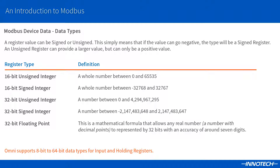Register values can be signed or unsigned. This simply means whether the register can hold a negative and positive value or only a positive value, as shown in the table. This is decided by the manufacturer and should be listed in the device documentation. The correct type needs to be configured in the comms blocks, otherwise incorrect values can be obtained. A signed integer can hold a negative and positive value. An unsigned integer can only hold a positive value. Floating point registers are used when the value includes a decimal function such as a temperature value — sometimes called real values in the datasheet. Omni supports all the standard Modbus registers and length types up to 64-bit values.